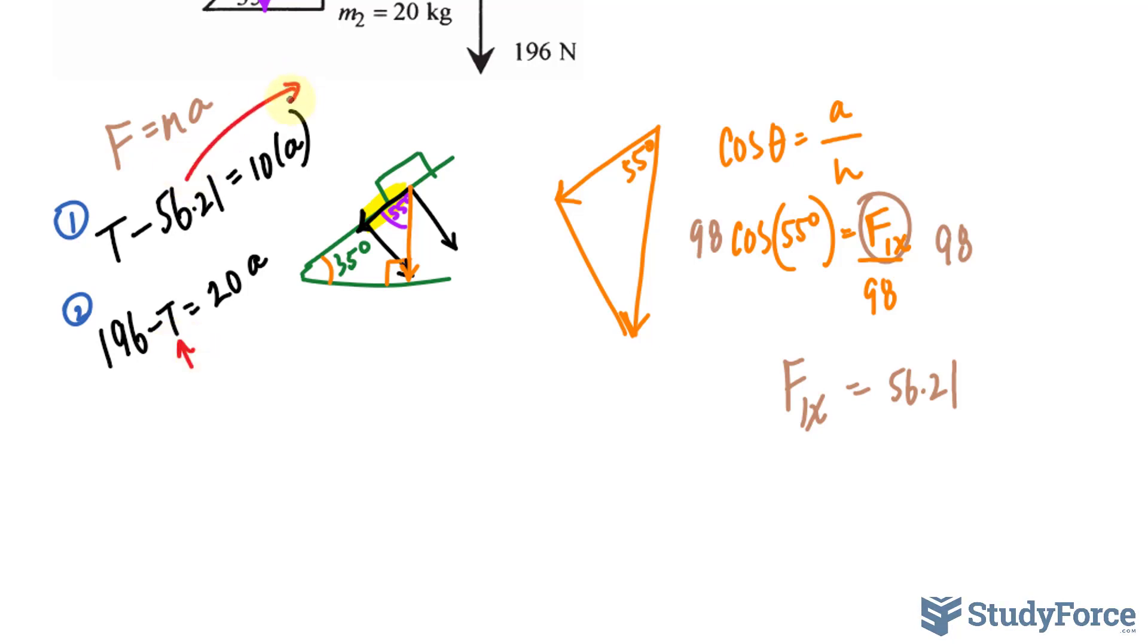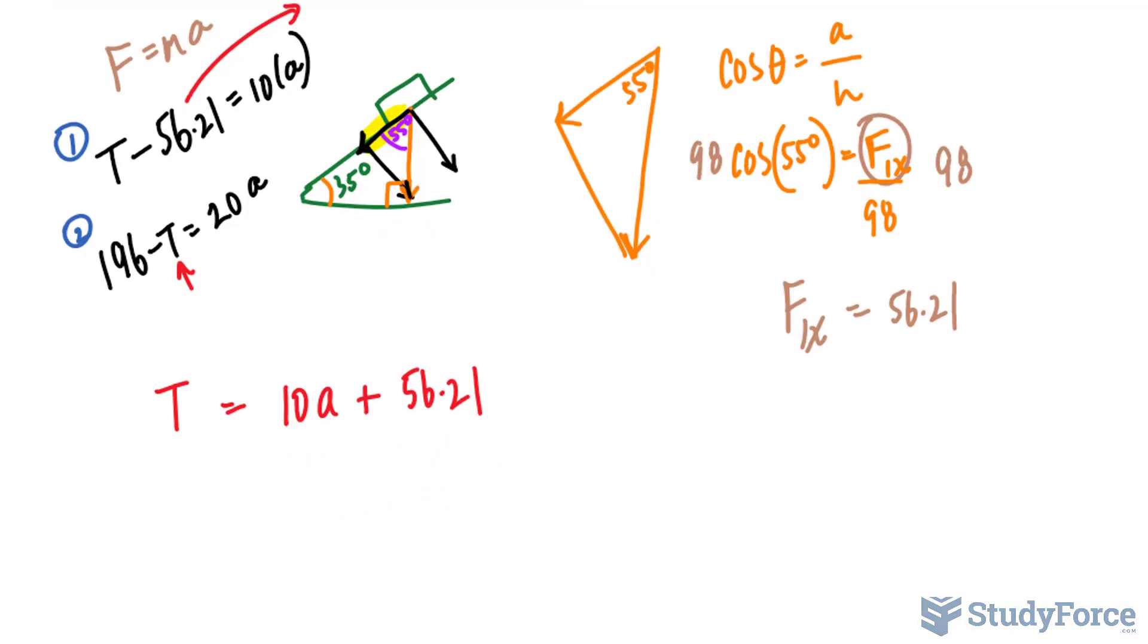So I will take this over. I have t equals 10a plus 56.21. And I'll substitute this expression right there.